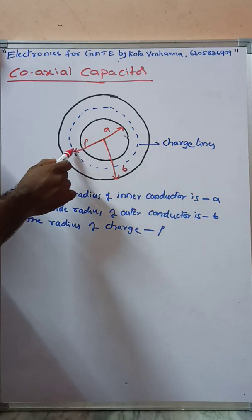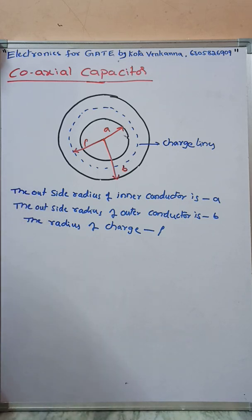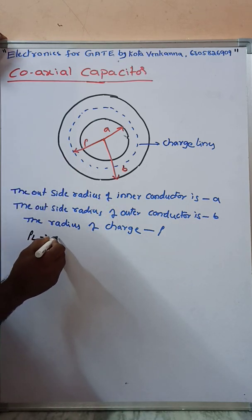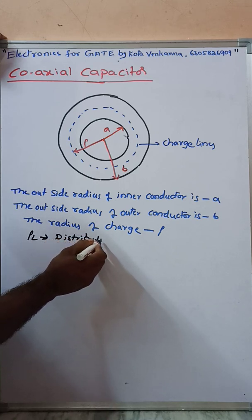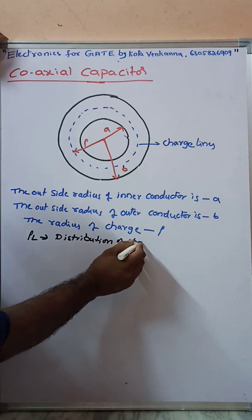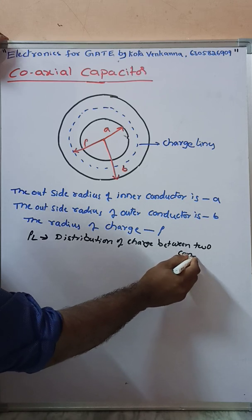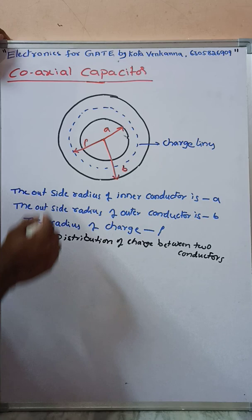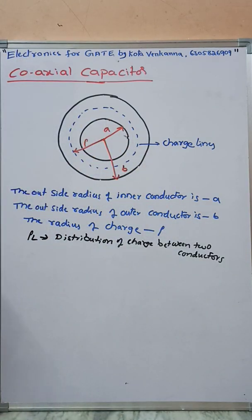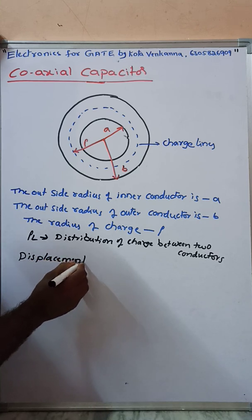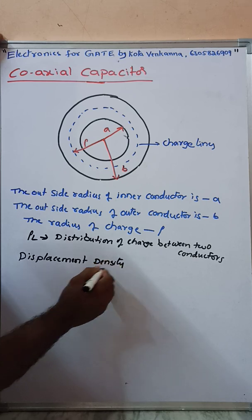This shows the charge lines, where rho represents the radius of the charge. Rho_L is the charge distribution between the two conductors. The displacement density D is equal to rho_L divided by 2*pi*rho.